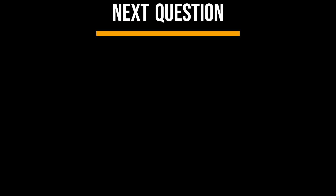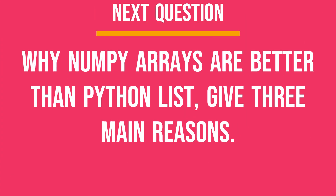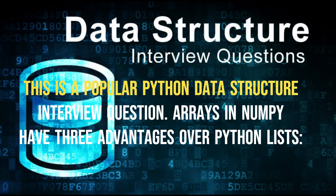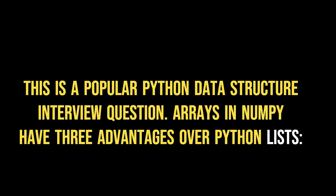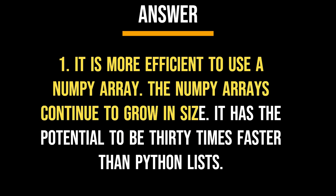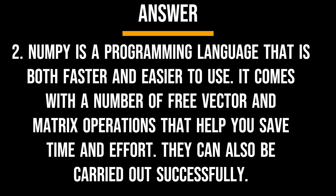Why are NumPy arrays better than Python lists? Give three main reasons. Arrays in NumPy have three advantages over Python lists. 1. It is more efficient to use a NumPy array — NumPy arrays continue to grow in size and have the potential to be 30 times faster than Python lists. 2. NumPy is both faster and easier to use. It comes with a number of free vector and matrix operations that help you save time and effort, and they can also be carried out successfully.